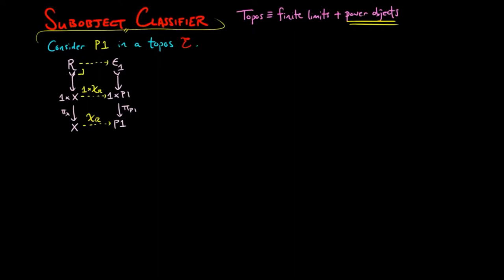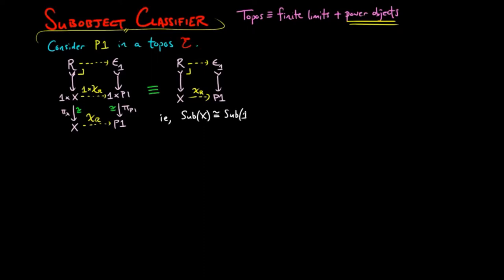But since projections from 1 cross any object is an isomorphism, we have this rectangle equivalent to the condition that for each sub-object R of X, there is a unique morphism χ_R from X to P1 making the square a pullback — i.e., the set of sub-objects of X is naturally isomorphic to the set of E-morphisms from X to P1.